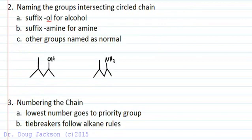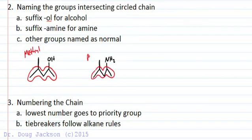Naming the groups intersecting the circles: there's not much difference for any other group. But when we circle the parent chain, instead of giving a group name like methyl, alcohols and amines get a suffix in the parent chain name. With alcohols we put '-ol' as a suffix at the end, and with amines we put '-amine' as a suffix. We mark that with a dash to remember to do it later. Other groups are named as normal.